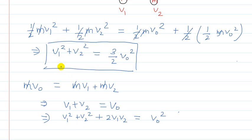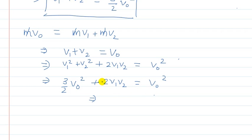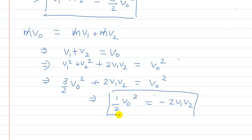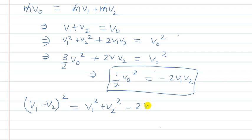We know the value of V1 squared plus V2 squared is 3/2 V0 squared. Substituting: 3/2 V0 squared plus 2 V1 V2 equals V0 squared. Therefore 2 V1 V2 equals V0 squared minus 3/2 V0 squared, which gives 2 V1 V2 equals negative 1/2 V0 squared. Now the relative velocity — velocity of A minus velocity of B — so V1 minus V2 whole square equals V1 squared plus V2 squared minus 2 V1 V2.